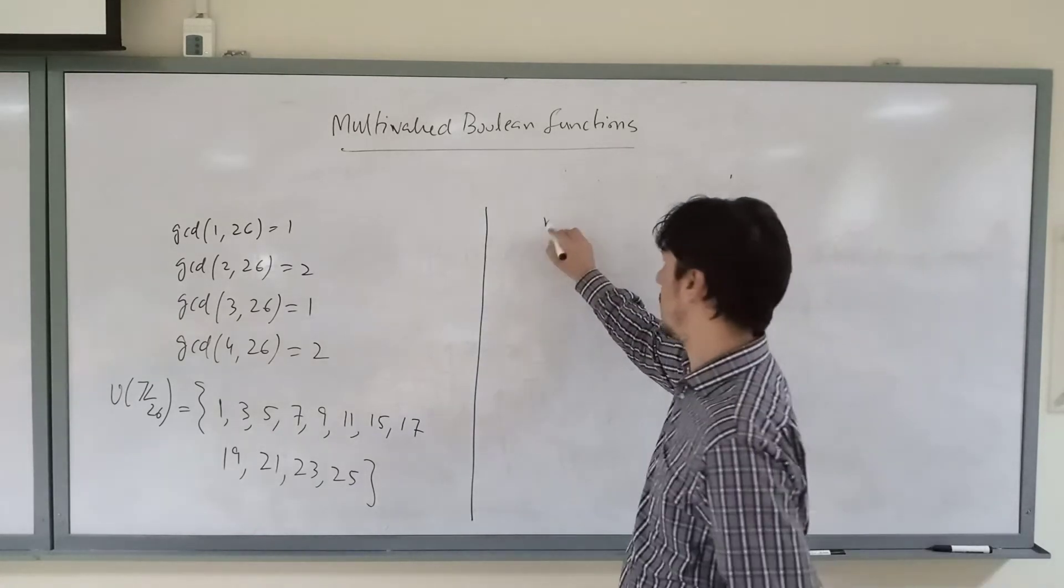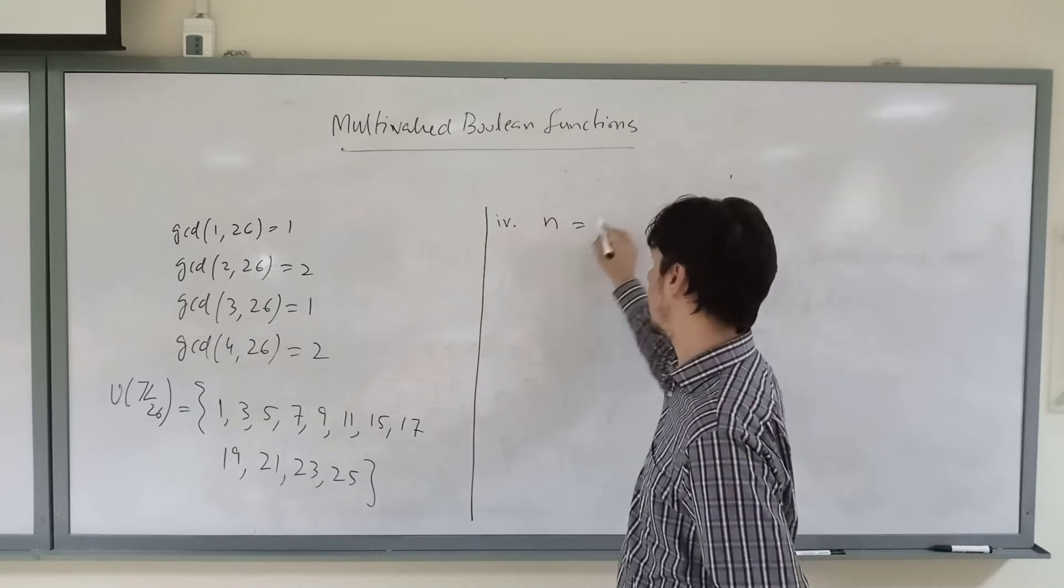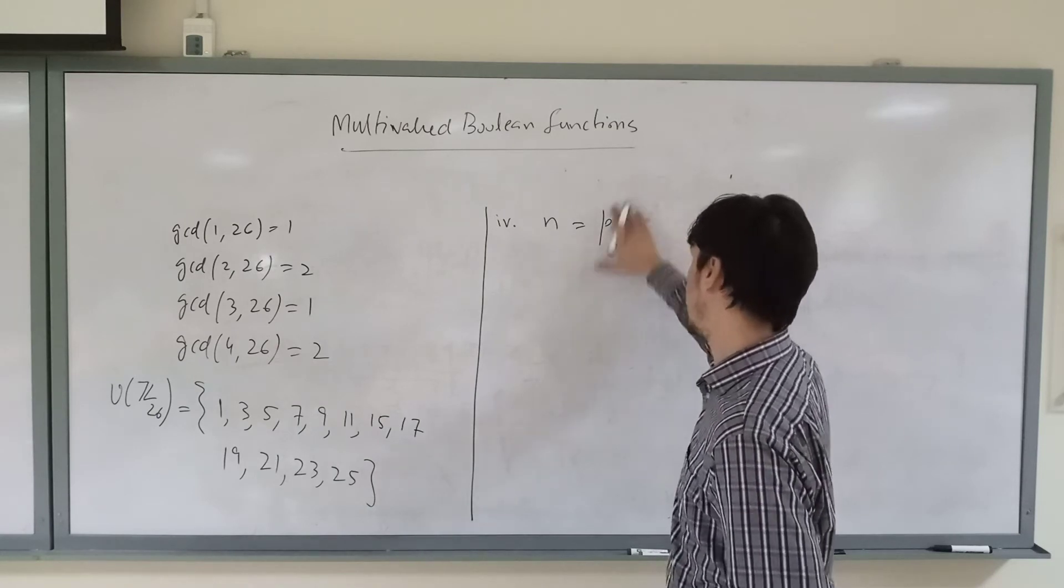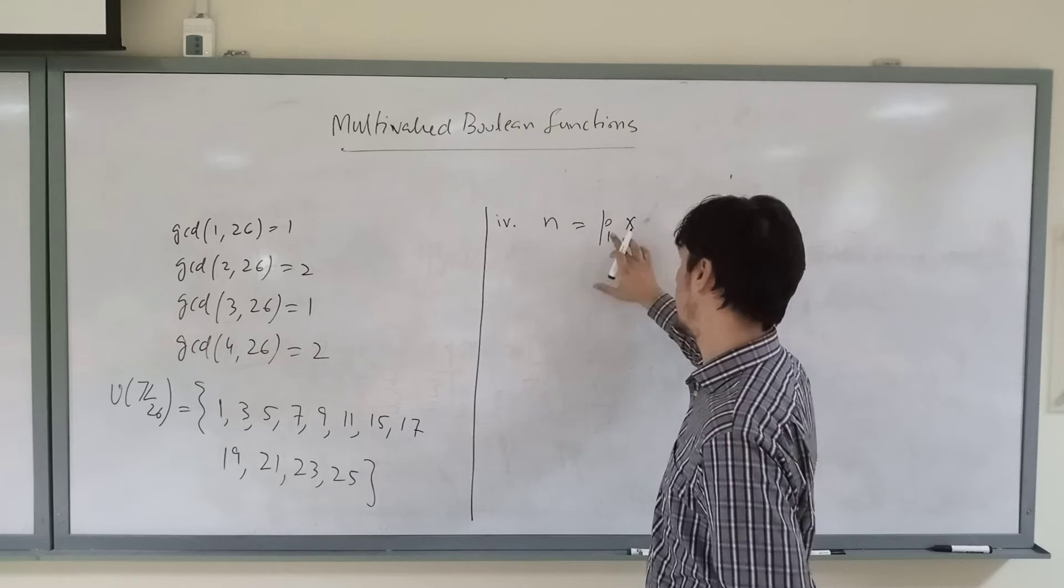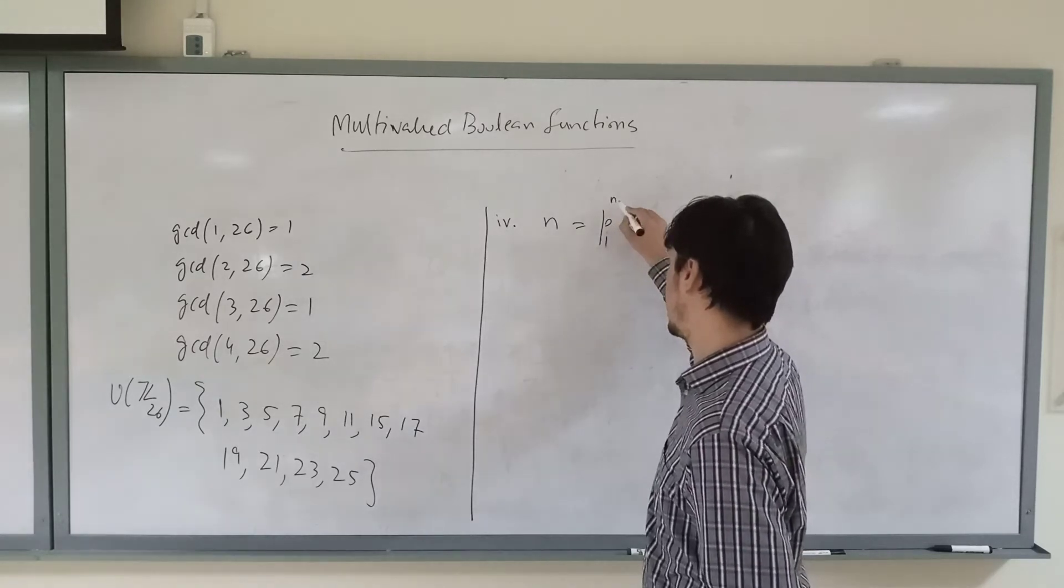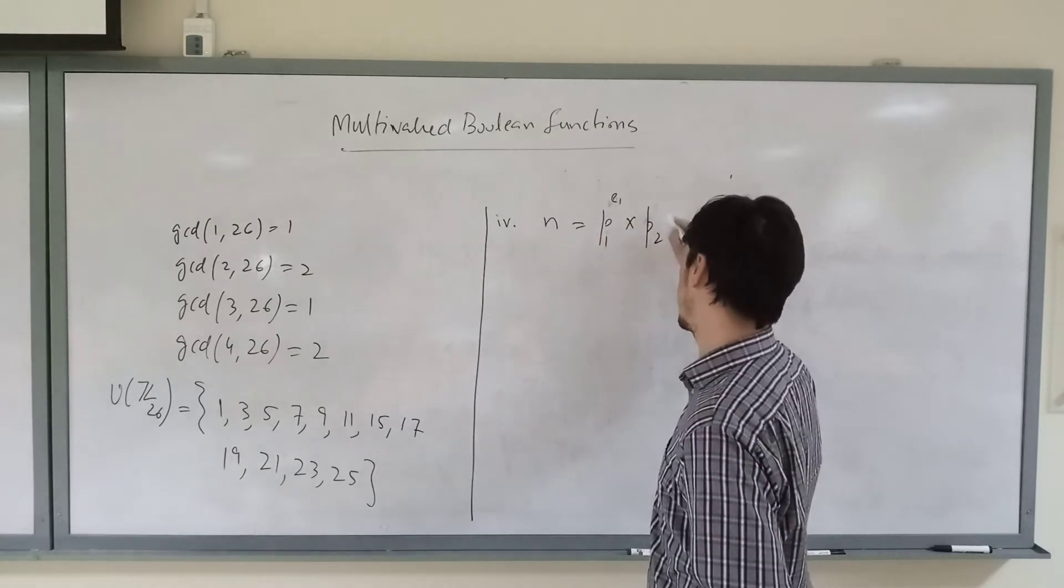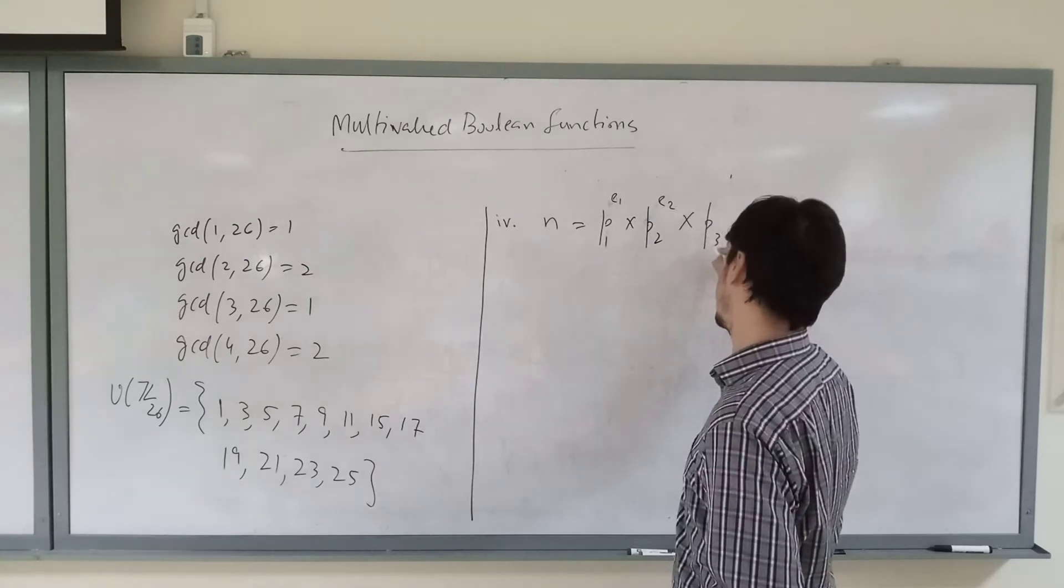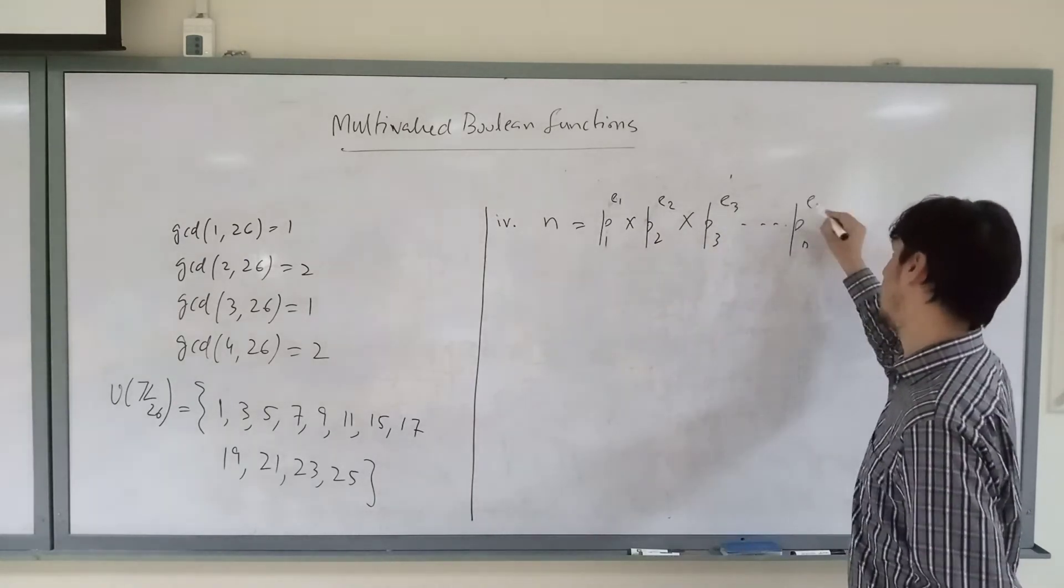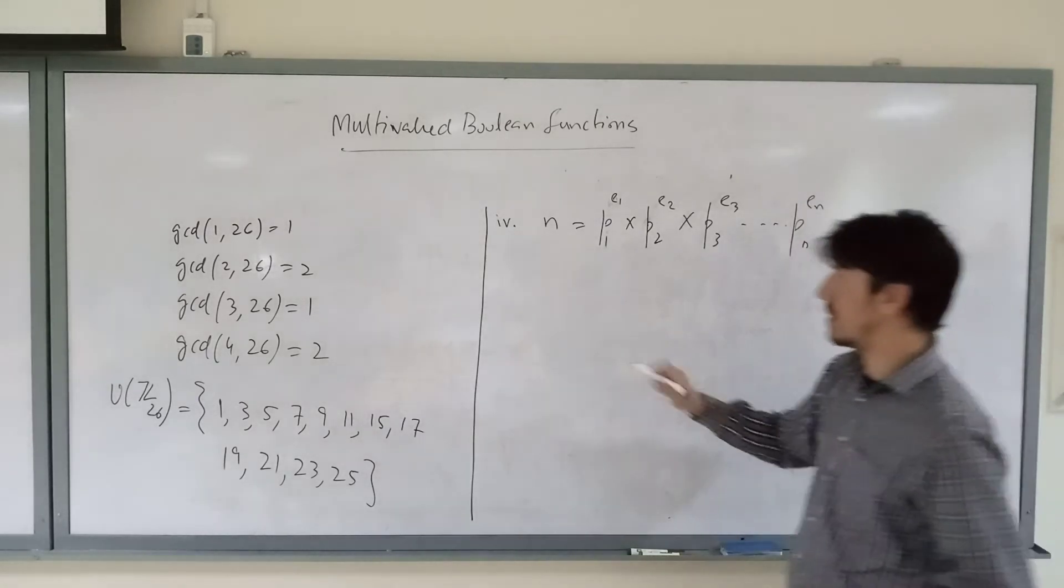Another one I just give you as homework: if you have an element that can be written as some product like p1^e1 into p2^e2 into p3^e3 and so on pn^en, you can take it as homework and produce the unit elements.